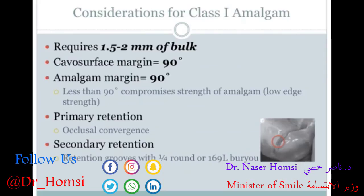For amalgam, a few important things to keep in mind. First, maintain enough bulk — with proper thickness, amalgam is a very strong material good for the posterior region, but if it's too thin it's prone to fracture. Instead of a cavo-surface margin being greater than 90 degrees, for amalgam you want it as close to 90 degrees as possible so the enamel is supported and the amalgam is 90 degrees and sturdy at the edges.